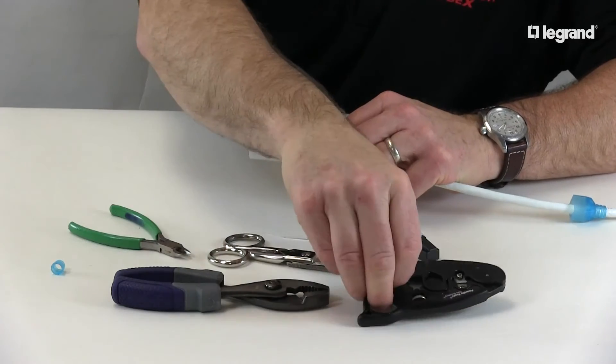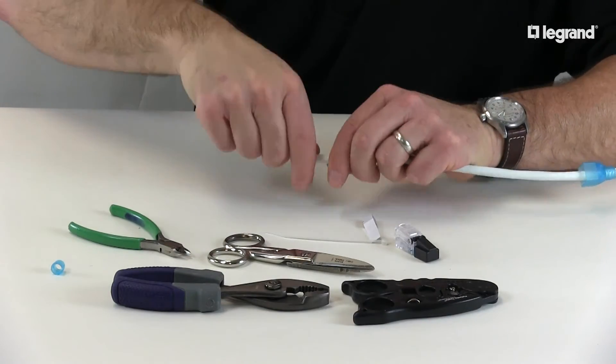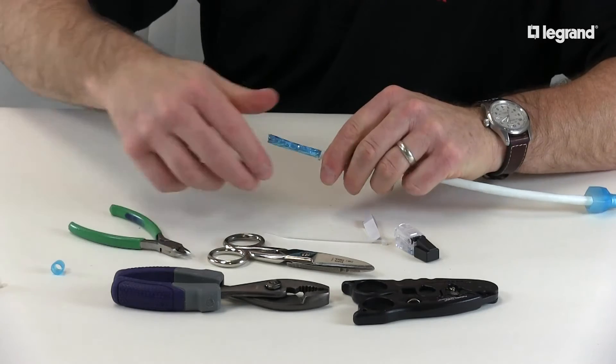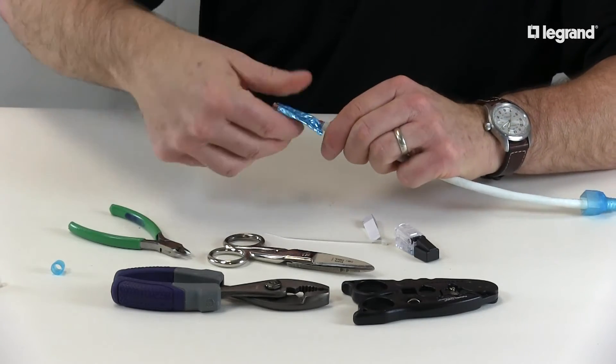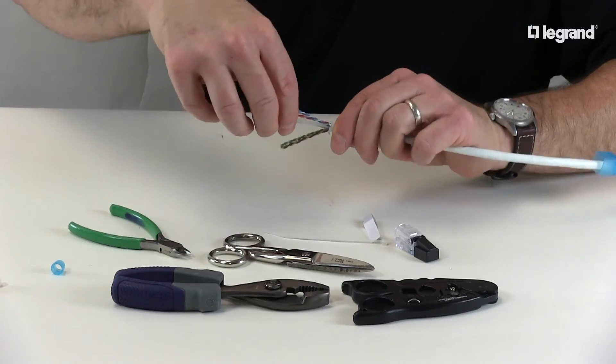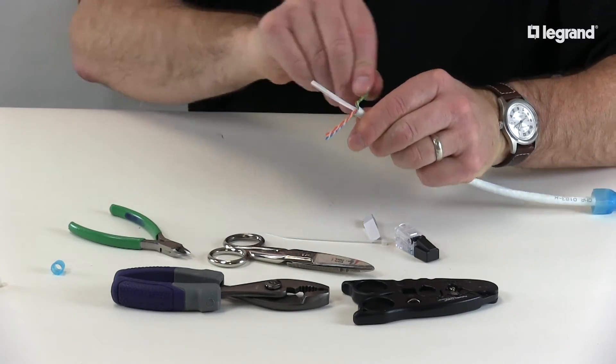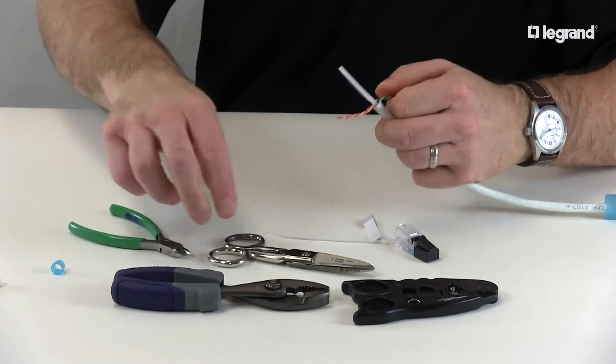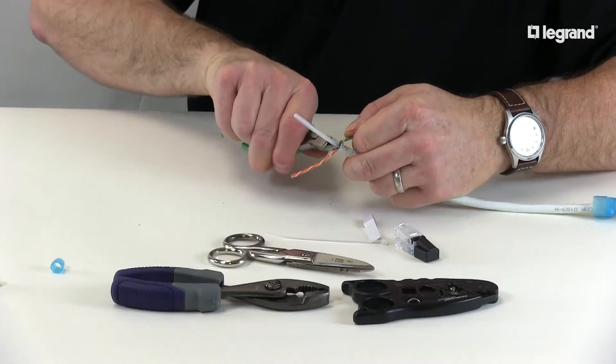Using your cable strippers, strip about an inch or two off your cable's jacket. Then spread your pairs back. This will expose any spline that's in the cable. Trim any spline so that it's flush with the cable's jacket.